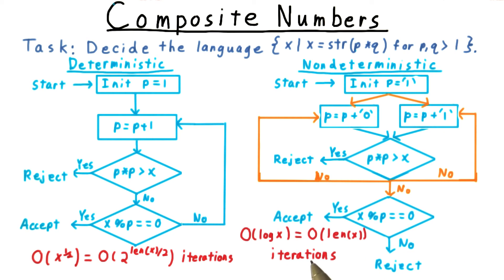This nondeterministic strategy is faster because it only requires log x iterations of this outer loop. The divisor p is set one bit at a time, and can't use more bits than x, the number it's supposed to divide.